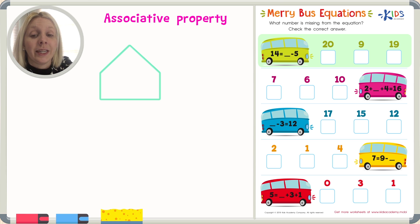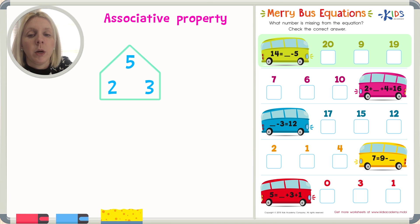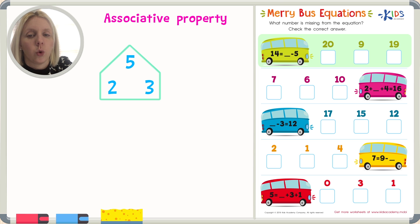I'm going to give you an example of a number family to start with. So the three numbers that go together are five, two, and three. I'm going to put them in a house because it helps us to keep track and organize these numbers. I like to put the biggest number at the top of the house just to keep things organized. These numbers can be mixed up in an equation in different ways but they're always going to be in the equation.